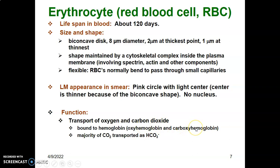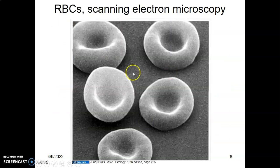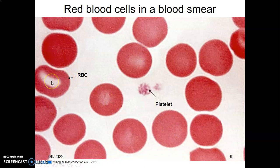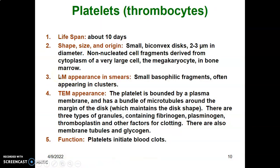The function of the red blood cell is to transport oxygen and carbon dioxide. These are bound onto hemoglobin as oxyhemoglobin and carboxyhemoglobin respectively. The majority of carbon dioxide is transported in the form of bicarbonate ions. Under the electron microscope you can appreciate the biconcave shape, and under light microscopy in the blood smear, the center of the red blood cell looks lighter and the shape can change.